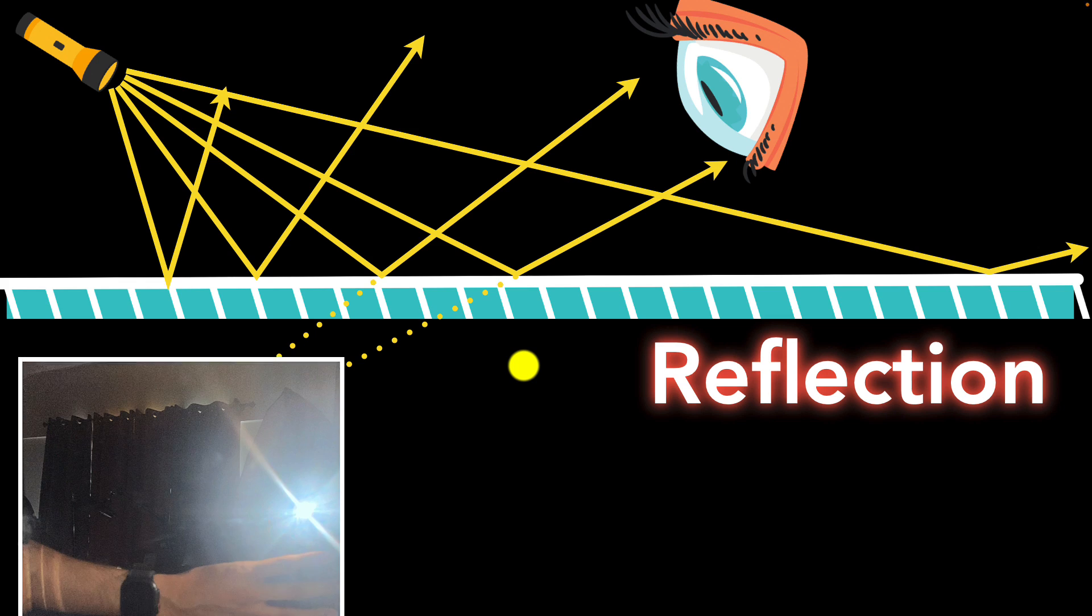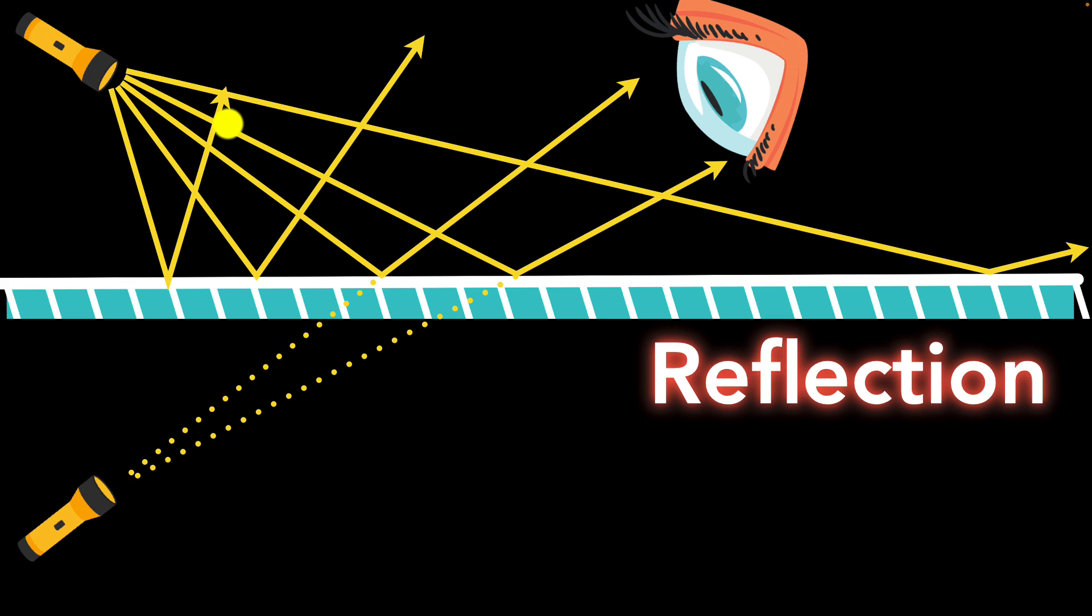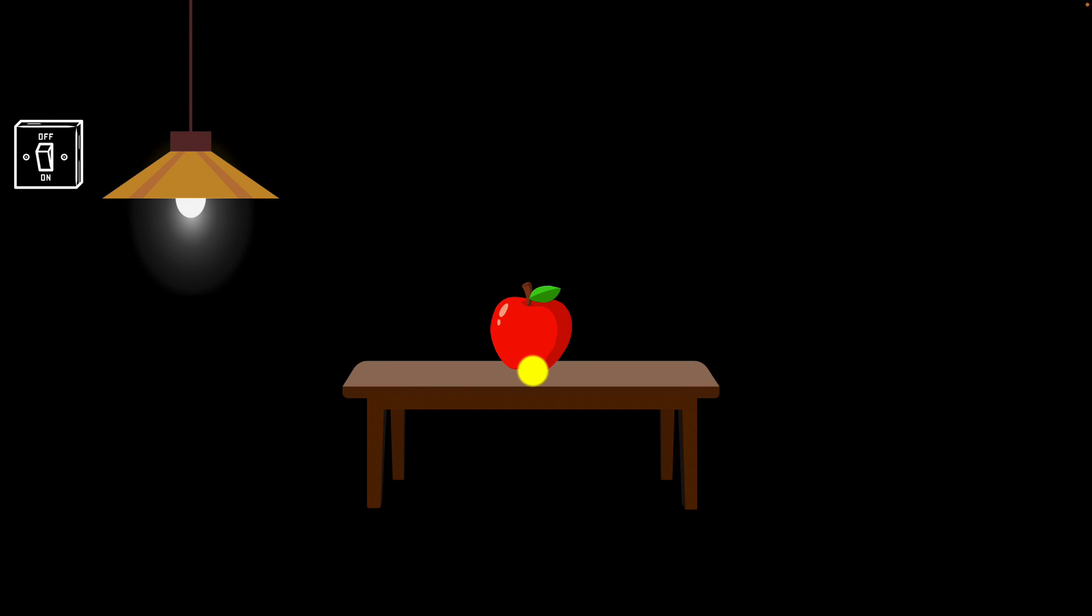And that's why we say that we're seeing reflection in our mirror, right? And so whenever light bounces off of something, it can be anything not just mirror, we call this phenomena reflection. And that's how you see an apple, for example. An apple cannot produce its own light, and that's why if the room is dark you can't see an apple. But when you switch on the light you can see the apple because the light is being reflected off of the apple and it's entering into your eyes. That's how you see it.